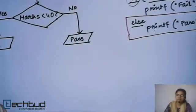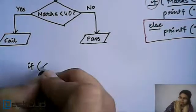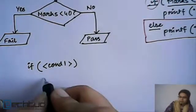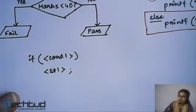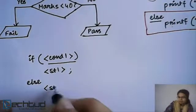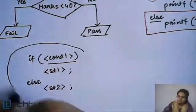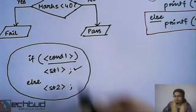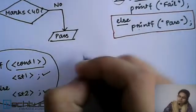The general structure of if is: write 'if', then in a pair of parentheses write the condition, then write your statement. You can end it there, or if you want to do something when the condition is false, write 'else' and then the statement to be executed. This structure works when you need to execute only one statement for the true or false result of your condition.